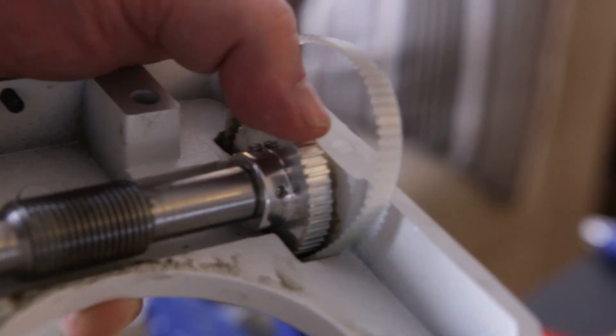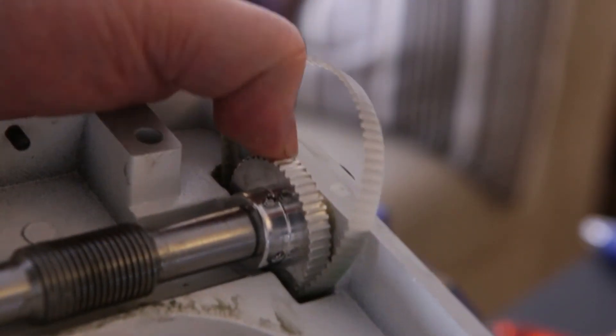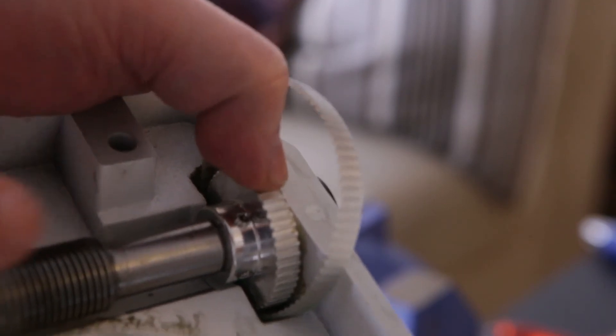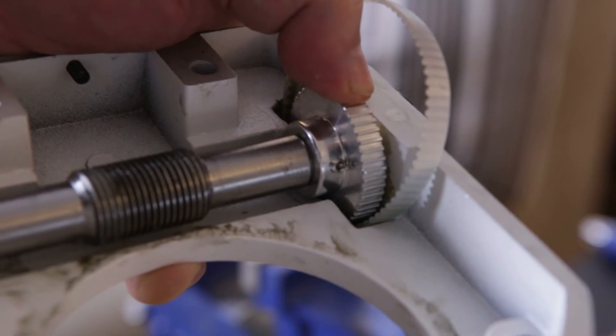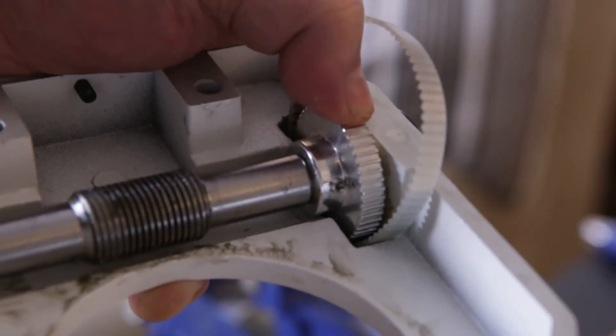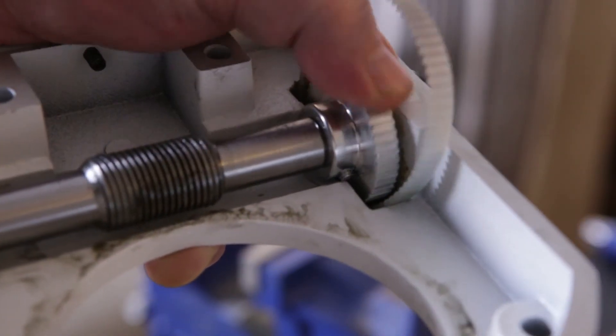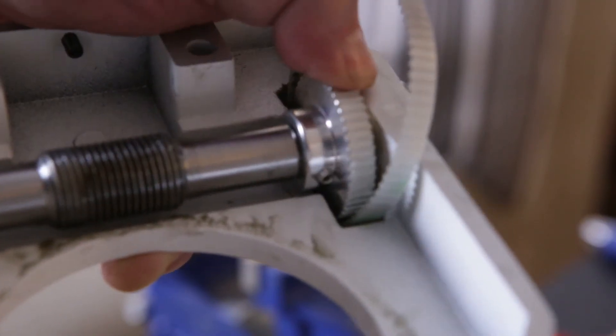The other problem that I have here now is that because the other grub screw on the pulley is longer than the other one, it's actually hitting the aluminum housing in there.